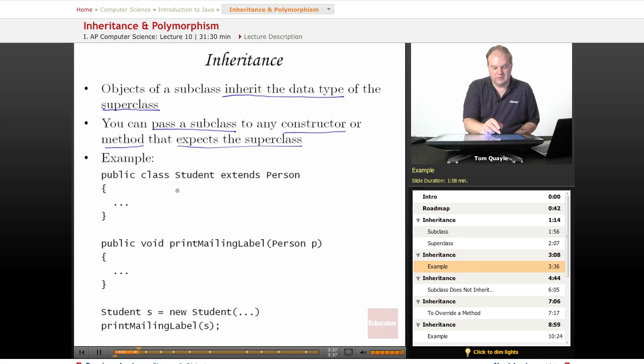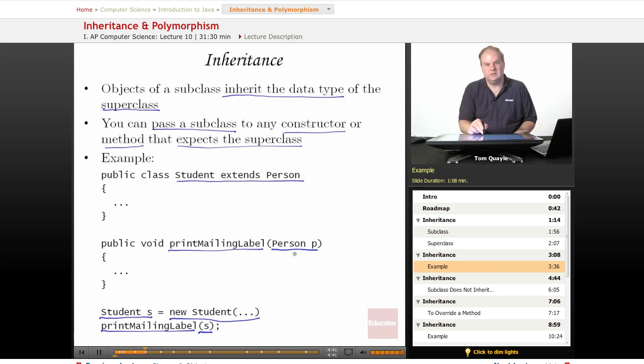So for example, if I continue with the same example as before and I have student extends person, so student is a subclass of person, student is a person. And I have a method print mailing label that is defined somewhere else outside of both the student and person classes. And print mailing label takes a person, P, an object of type person, as its parameter. And it retrieves the data fields from that person necessary to print a mailing label. I can declare a student S, call the constructor to create a new student, and I can actually pass S to the print mailing label method. Even though print mailing label accepts a person and S is a student, student is a subclass of person. So student can actually act as a person and this is perfectly valid in Java to pass a subclass to a method that expects the superclass. That will work just fine.